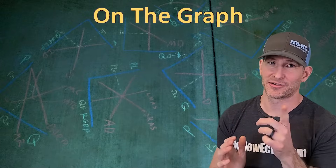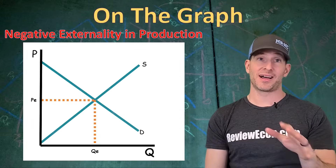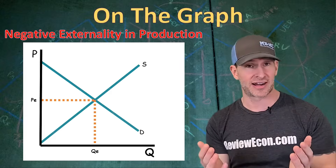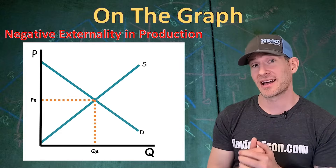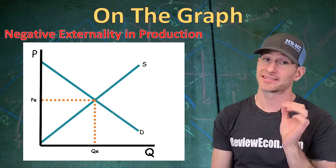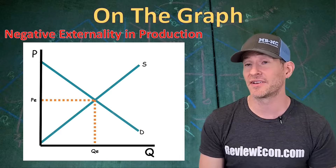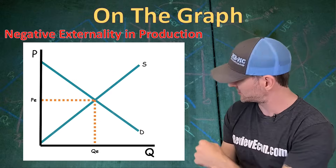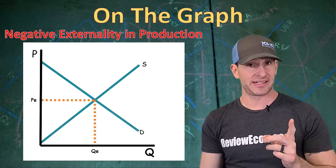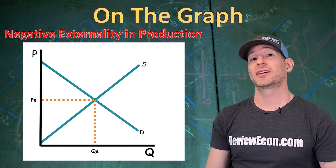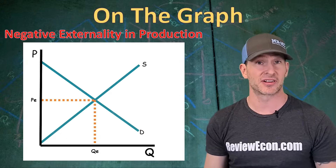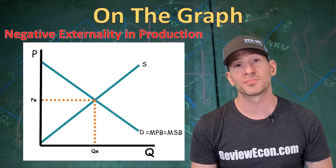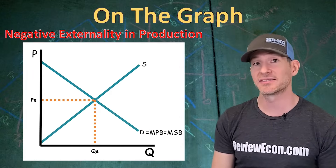Now it's time to put these externalities on the graph. We're going to start off with a regular supply and demand graph — quantity on the x-axis, price on the y-axis, a downward sloping demand curve labeled D, an upward sloping supply curve labeled S, and equilibrium price and quantity at their intersection. Since we're graphing a negative externality in production, the demand curve is also the marginal private benefit (MPB) as well as the marginal social benefit, because all benefits fall on the buyers.